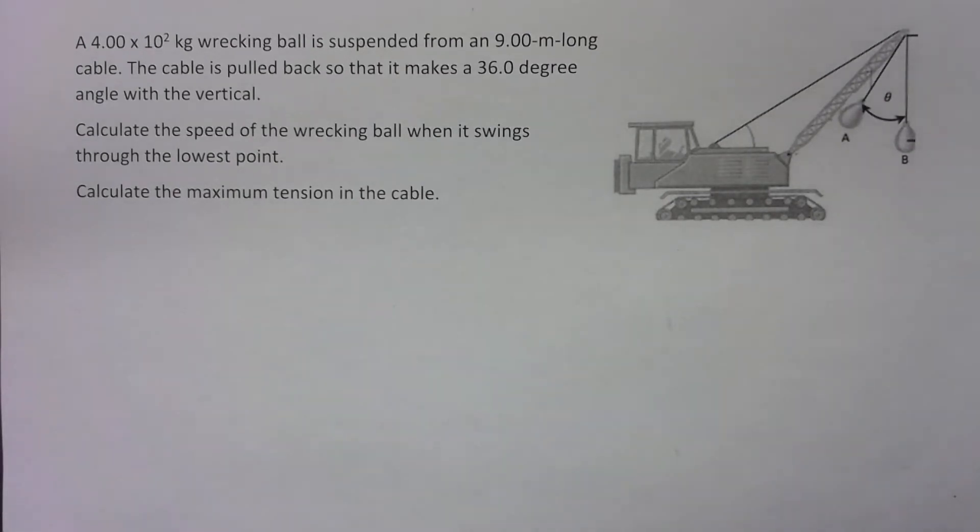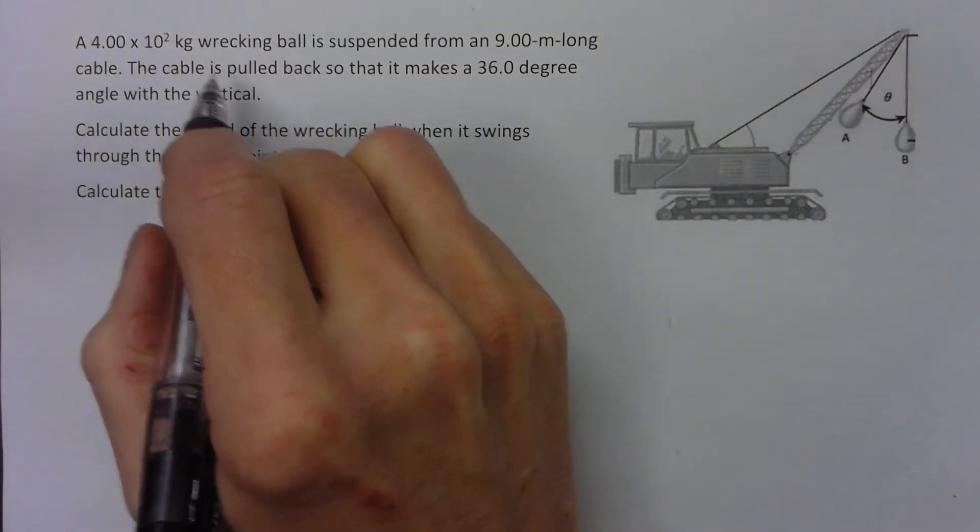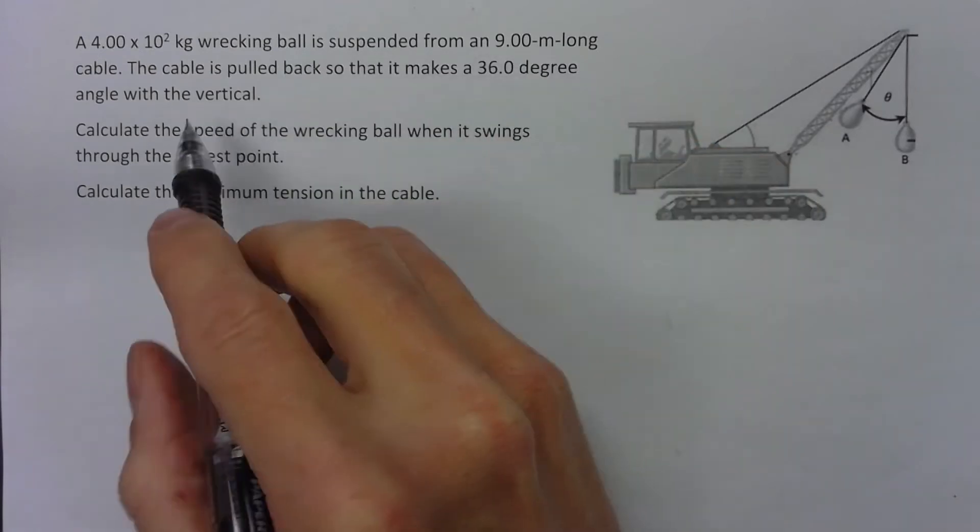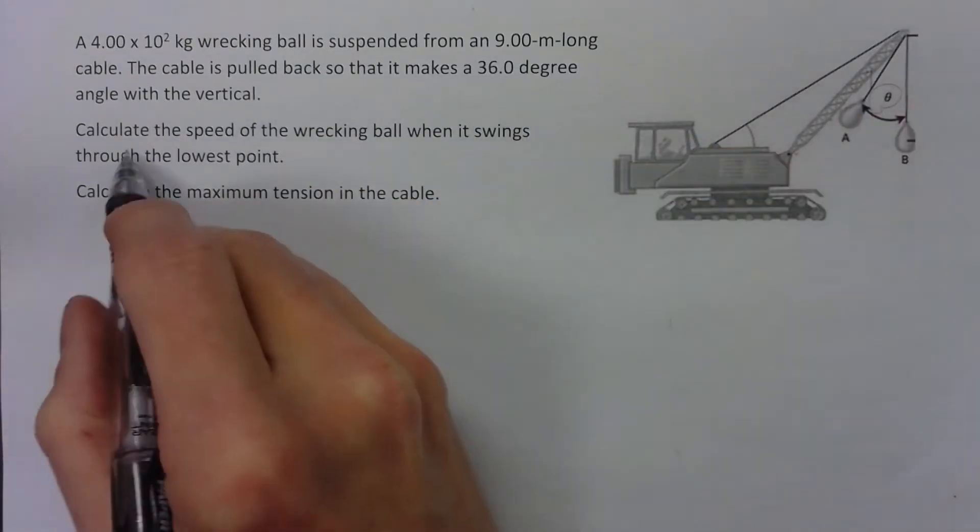Alright, another problem with a swinging thing. Got a couple of these videos now, but in this one we've got to figure out the tension of the cable once it gets to the bottom. We got a 400 kilogram wrecking ball, nine meter long cable pulled back 36 degrees from the vertical. So that's that angle. Calculate the speed when it gets to the bottom, lowest point.